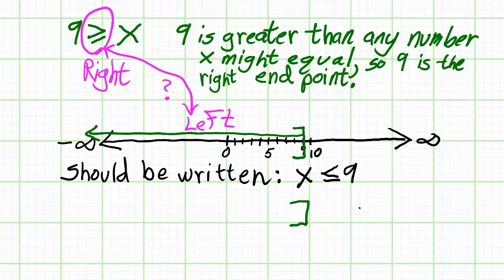Now write the interval notation. Be careful to put the leftmost number symbol on the left and the rightmost on the right. That means negative infinity goes on the left and 9 goes on the right. And don't forget your bracket.